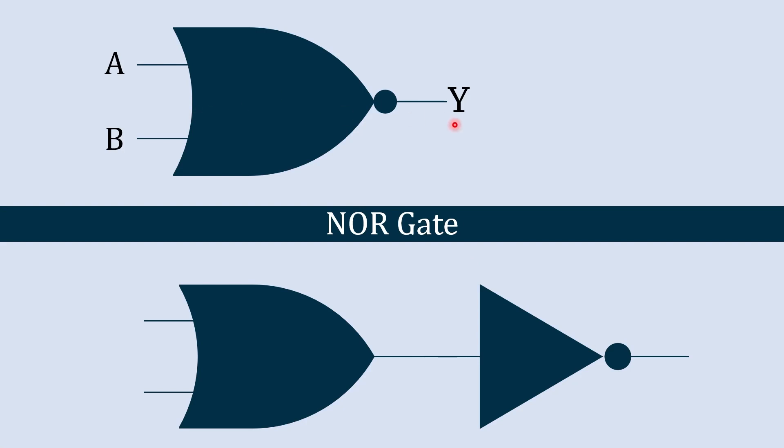We have two inputs A and B and the output is Y. The same way inputs are A and B, but the output of this OR gate is A plus B and the output of this NOT gate is Y. Now we'll see the truth table.